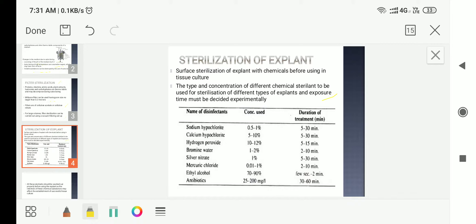Some of the disinfectants which are used are sodium hypochloride, calcium hypochloride, hydrogen peroxide, bromine water, silver nitrate, mercury chloride, ethyl alcohol, and antibiotics are also added. You can see all these sterilization agents have different concentrations and the duration of treatment is also different.